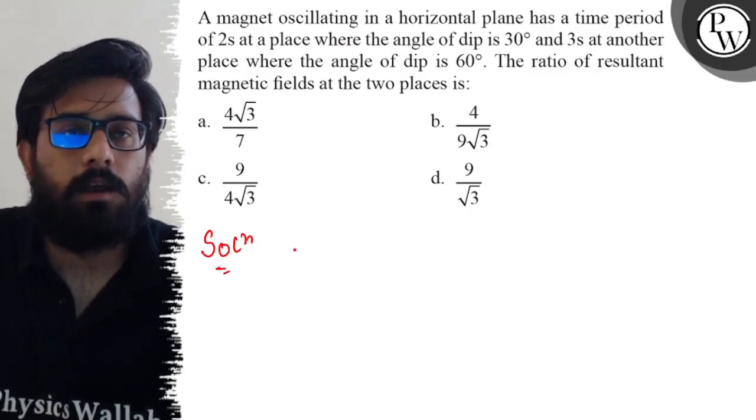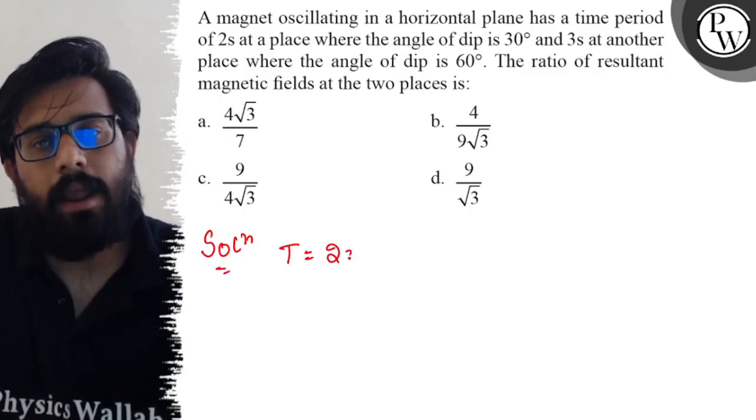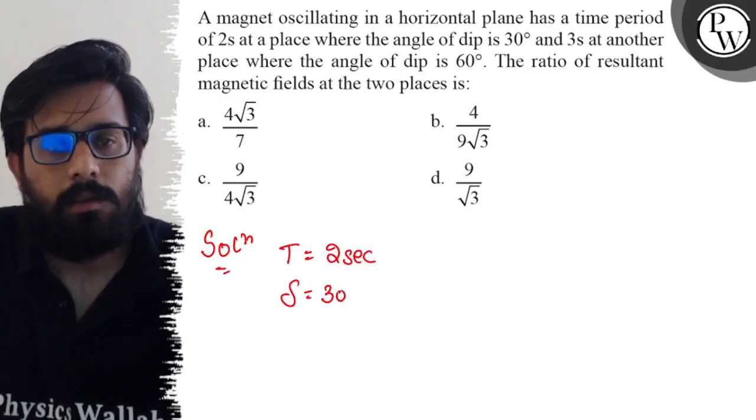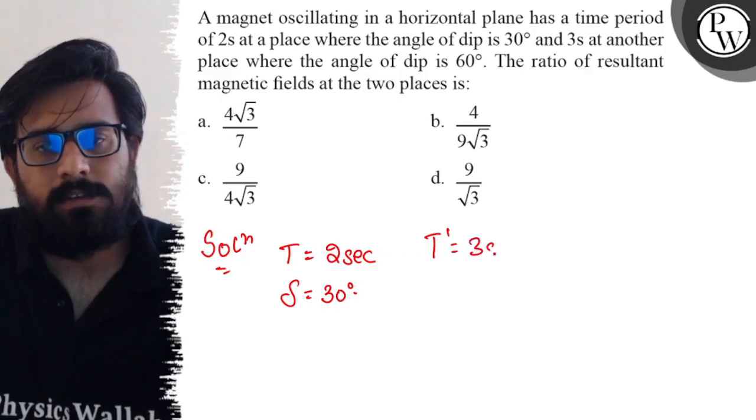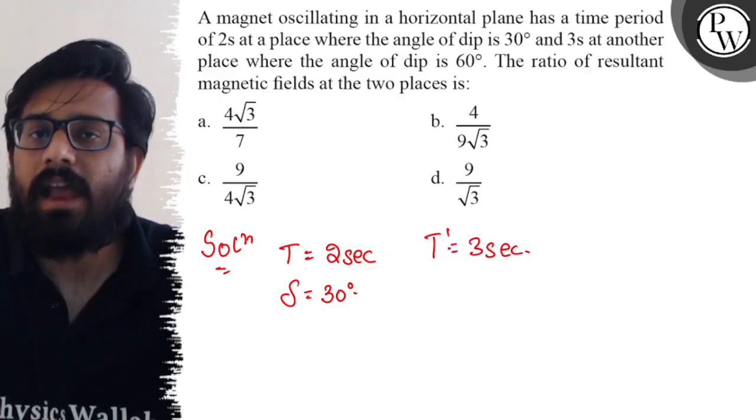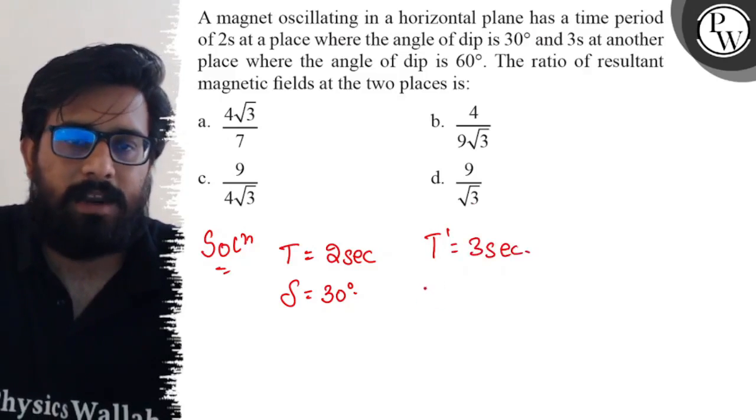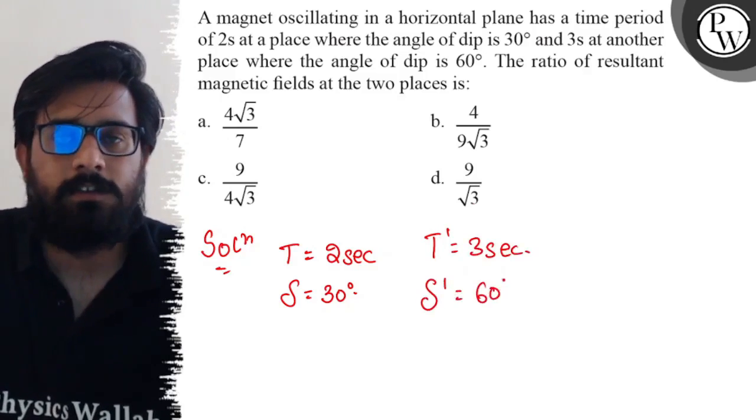In case 1, the time period is 2 seconds and the angle of dip is 30 degrees. In the second scenario, we have a time period T' of 3 seconds and the angle of dip δ' is 60 degrees.